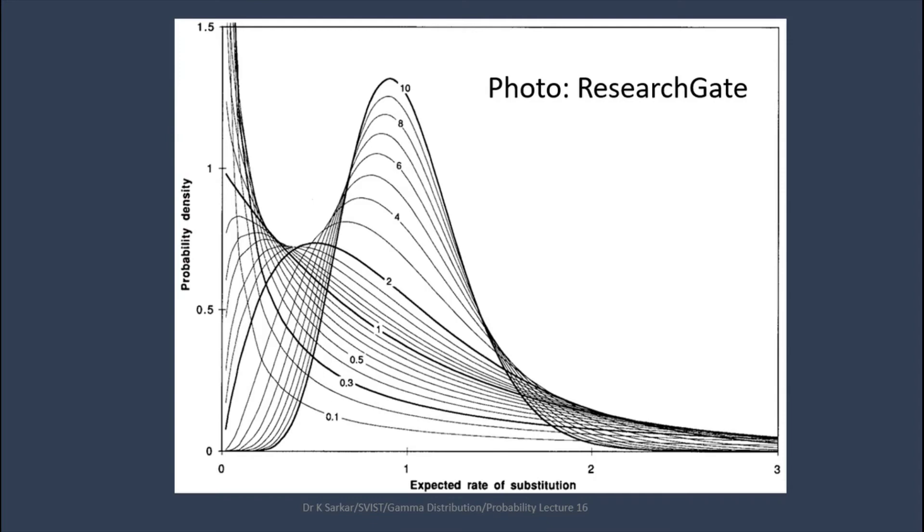In this diagram, for different shape parameters and rate parameters, the PDF of gamma distribution are drawn.